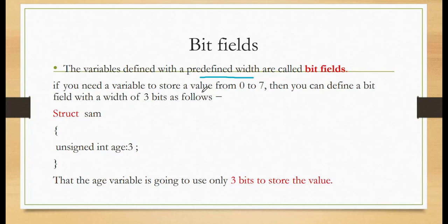If you need a variable to store a value from 0 to 7, then you can define a bit field with a width of 3 bits as follows.